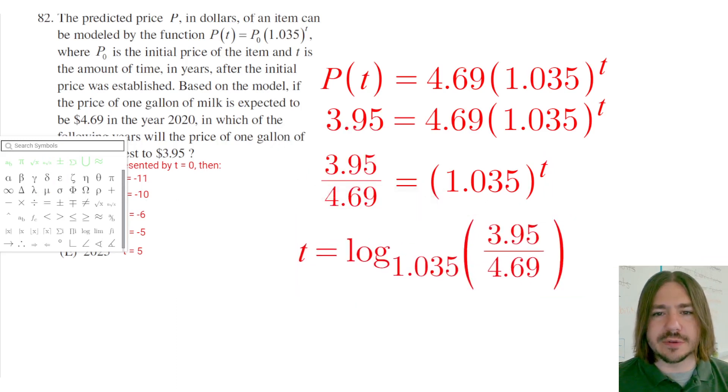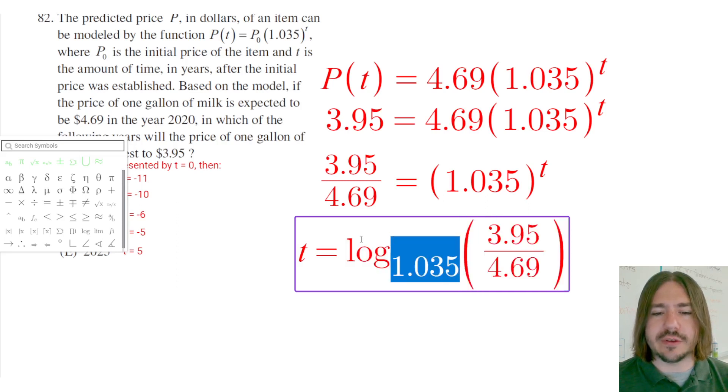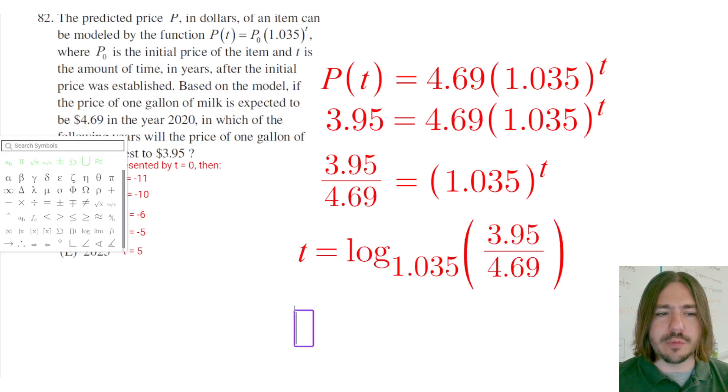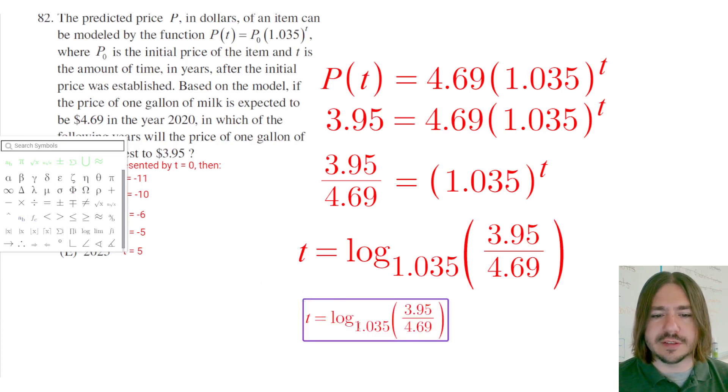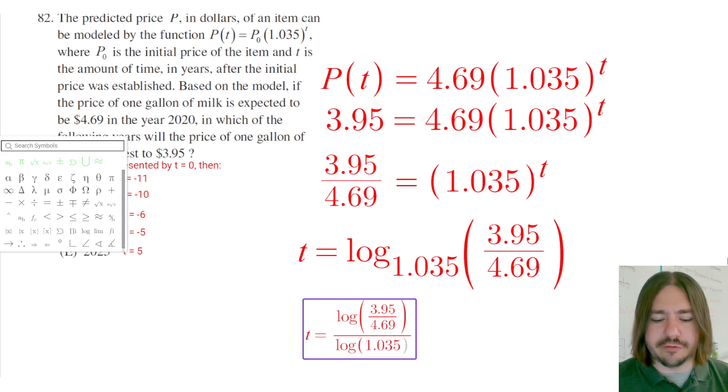Now, because you only will have access to a scientific calculator, we can't type it in like this. You can't type in any base you want into a scientific calculator. So we do have to use the change of base formula here and rewrite this in terms of log base 10 or log base e. I'm just going to go with log base 10 for simplicity's sake. So this would be log of this fraction divided by log of the original base here, which is 1.035.